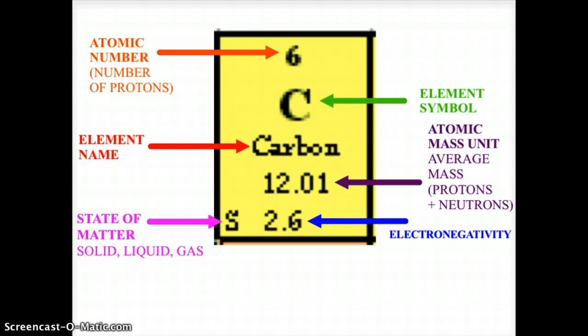Now we have the symbol in the center, always a capital letter. If there are two letters, it's always capital lowercase, as in chlorine, capital C lowercase L. The element name, and then below the element name we have the atomic mass. Now the atomic mass unit, it's actually the average mass of the carbon on Earth, and that average mass is based on several things, but we'll talk about that in another episode.